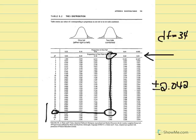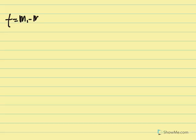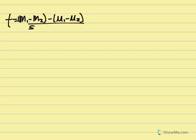Our critical t is plus or minus 2.042. Now we engage in all calculations to produce a t statistic for comparison. The t statistic equals the sample mean difference minus the population mean difference from the null (always zero), over the estimated standard error of the mean difference. We know M1 was 86.4 and M2 was 78.8. We still need to calculate the estimated standard error.